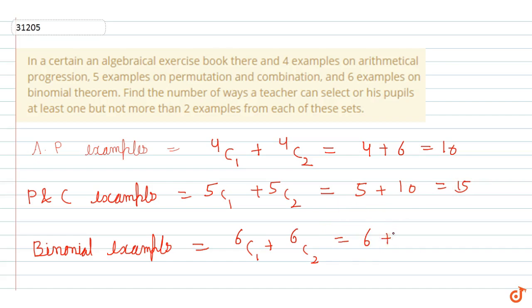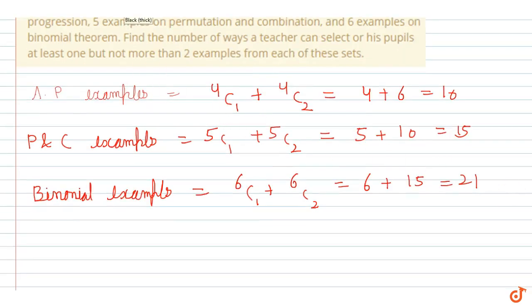Now 6C1 plus 6C2. 6C1 is 6 and 6C2 equals 15. So the total value is 21. Now let's find the total ways.